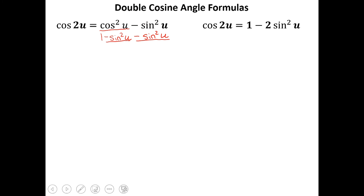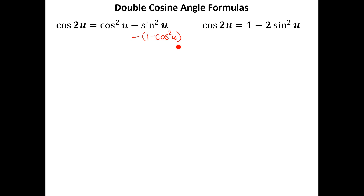For the second form, we can get the cosine of 2U in terms of only cosine. To do that, we change the sine squared of U into 1 minus cosine squared of U using the Pythagorean identity again. Because we have a minus sign, we distribute, and you end up with cosine squared of U minus 1 plus cosine squared of U. Combining like terms, cosine squared of U plus cosine squared of U gives us 2 cosine squared of U minus 1.